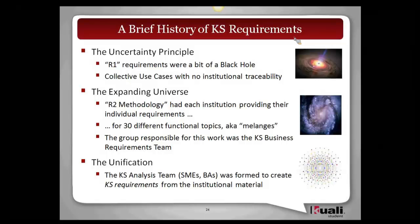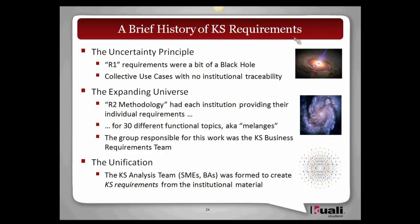So let's talk about our methodology for gathering requirements. For R1, curriculum management, I'm calling it the uncertainty principle, because requirements were a little bit of a black hole. What we did is we wrote collective use cases — all the SMEs and BAs got together; we were actually called the use case team at the time — and we wrote collective use cases that were supposed to represent how we wanted the system to operate. The problem was there was no institutional traceability, so if you wanted to understand where you needed configuration or where there was deviation across institutions, you really couldn't get at that information very easily.